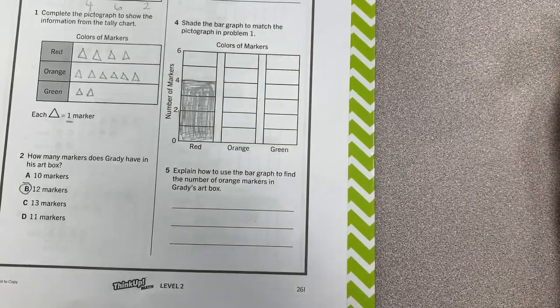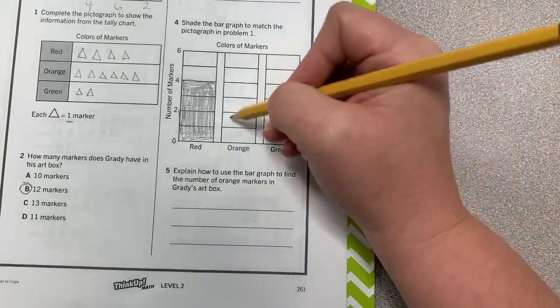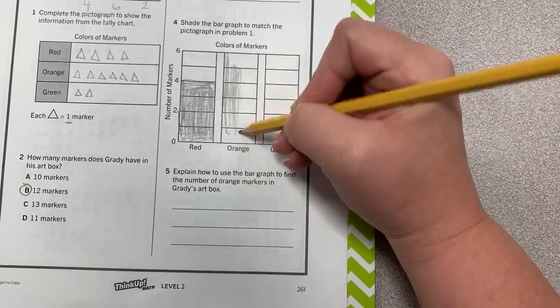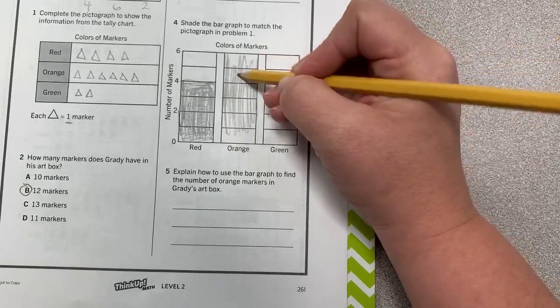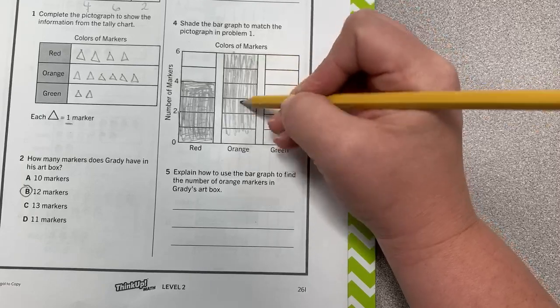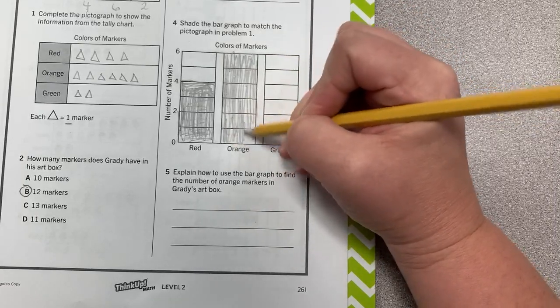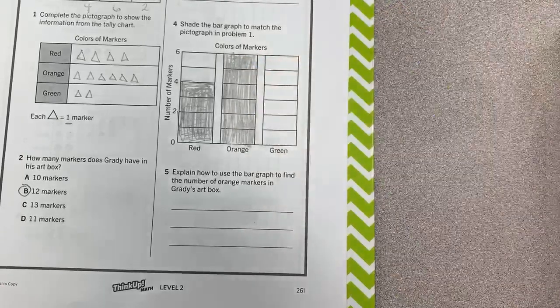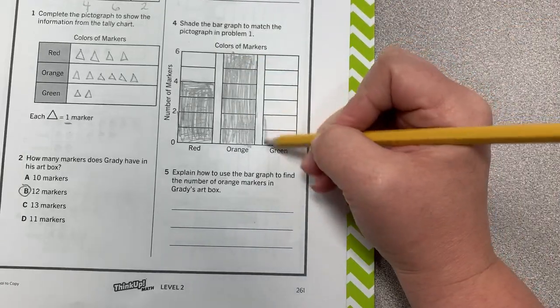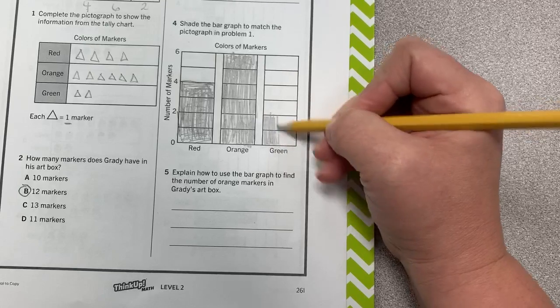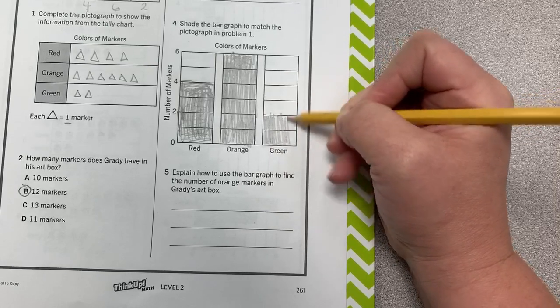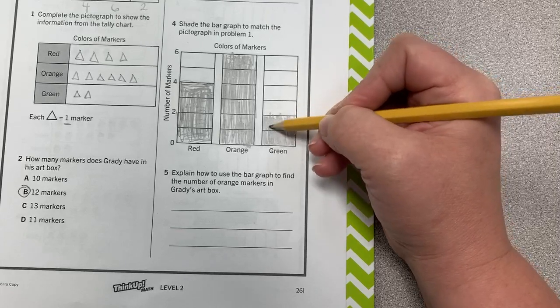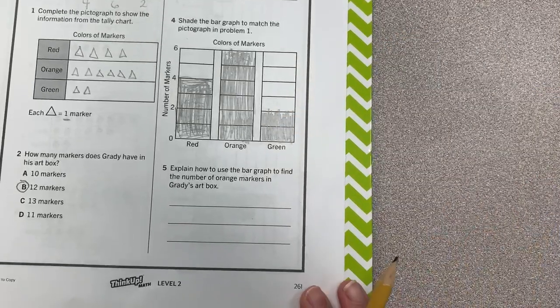Okay, orange is six. So we're going to go up to six. And the reason I'm not going to make it perfect is because y'all know how to color. This is a math lesson, not a coloring lesson. And green is two. So we're going to color up two. I want y'all to color better than what I'm doing, though.